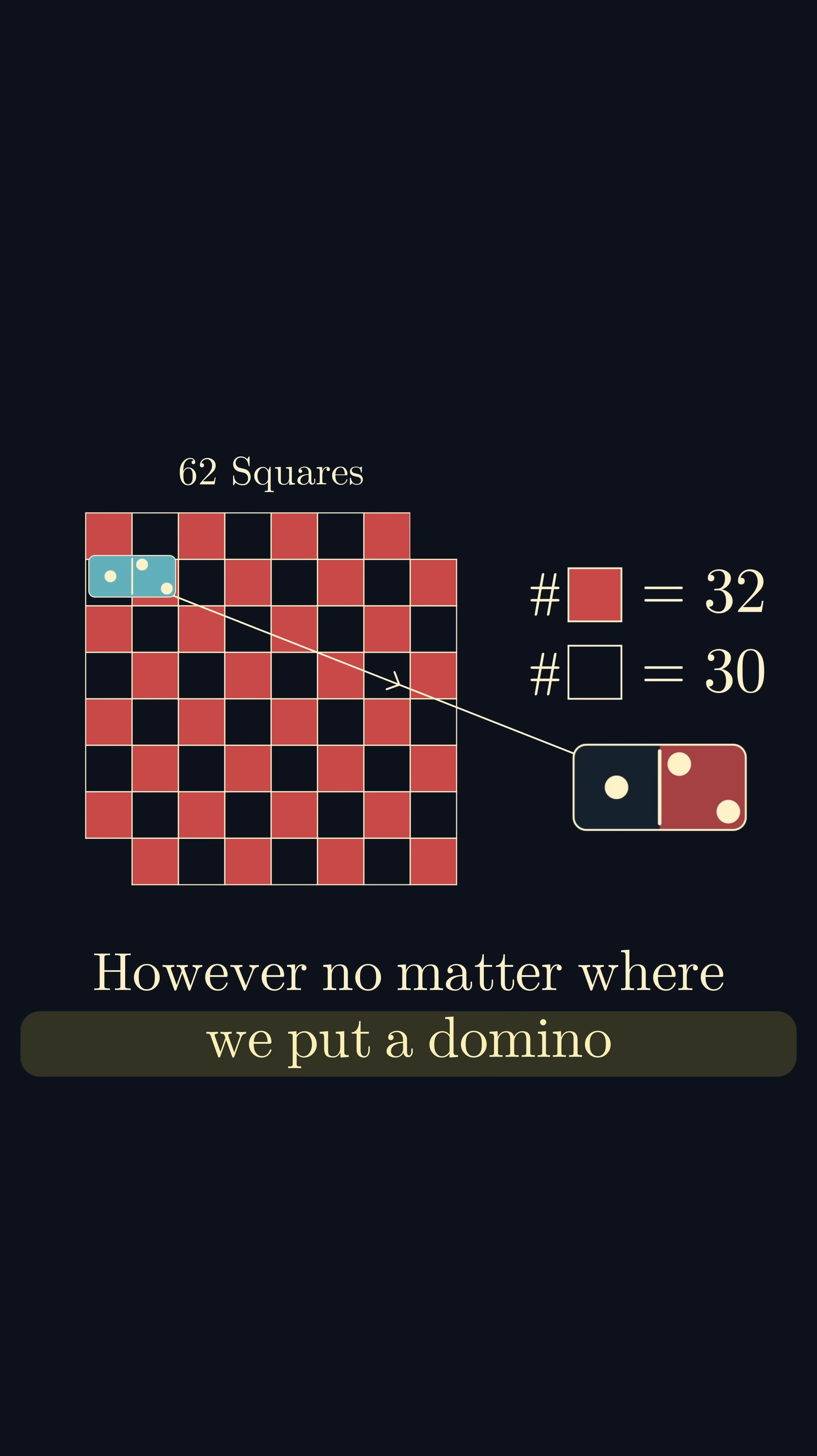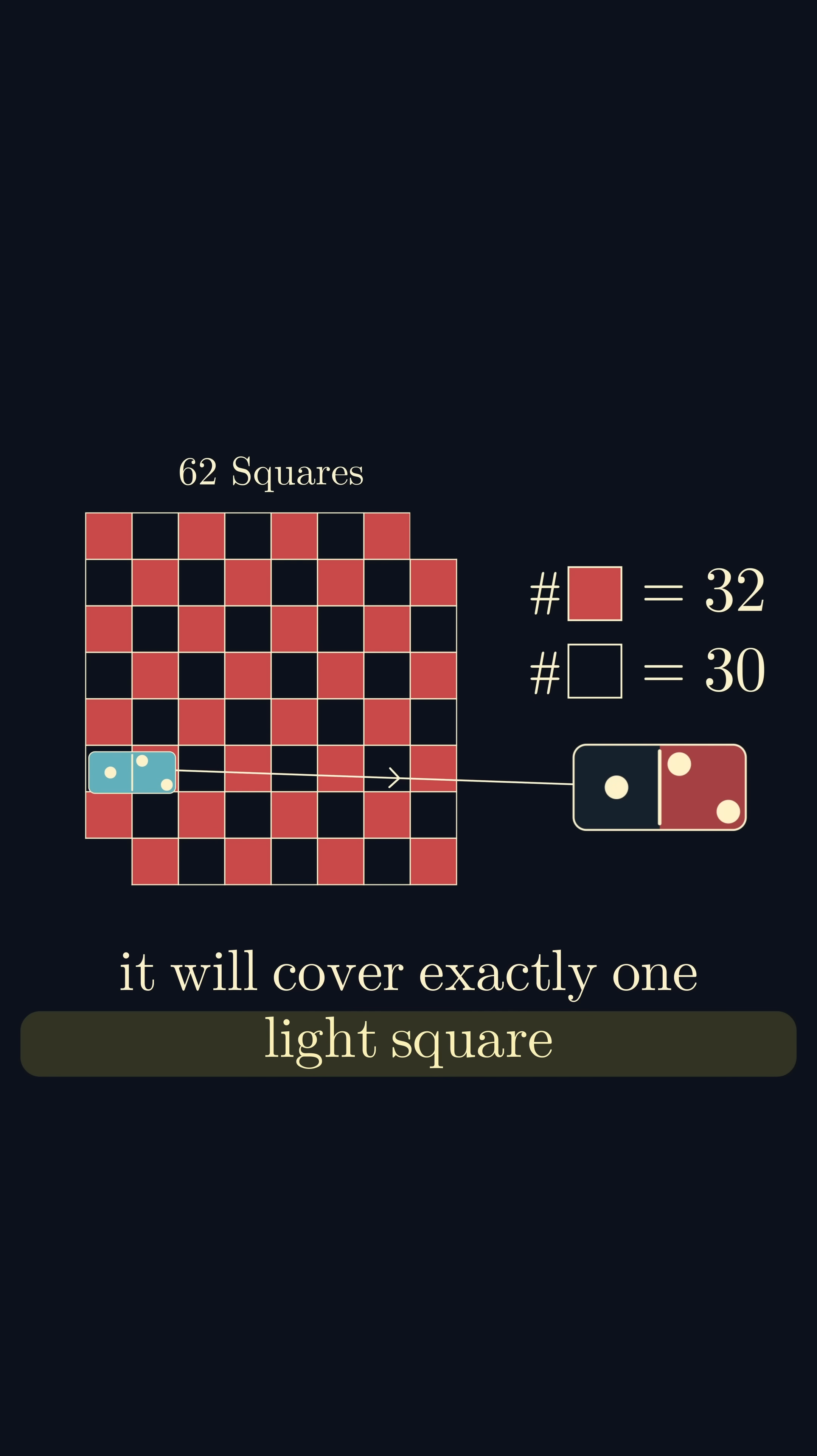However, no matter where we put a domino, it will cover exactly one light square and one dark square.